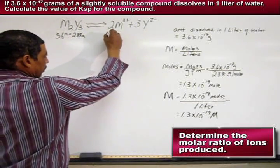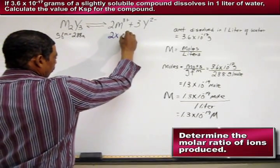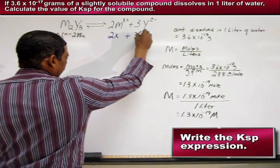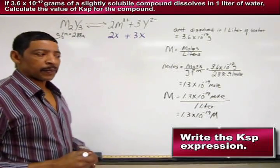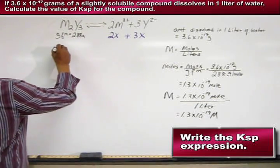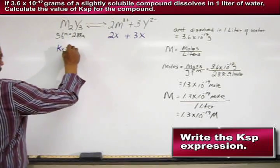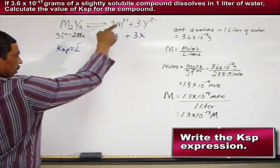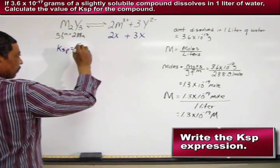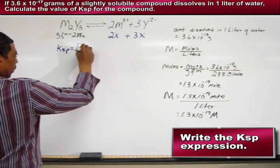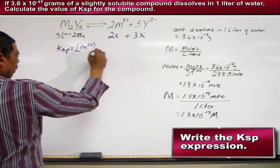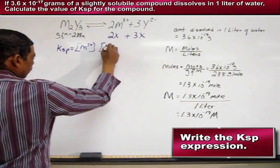So we may now write 2X plus 3X. The next step is to write a proper KSP expression where KSP is equal to the concentration of the ions, in this case, M3+ and Y2-.